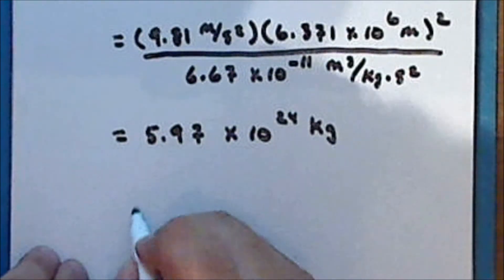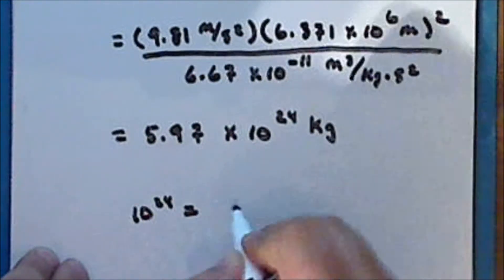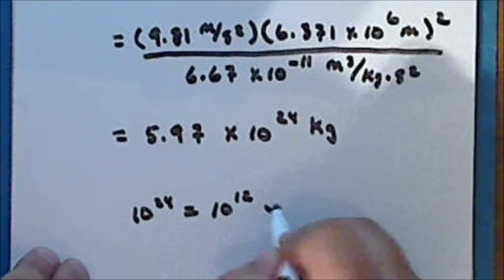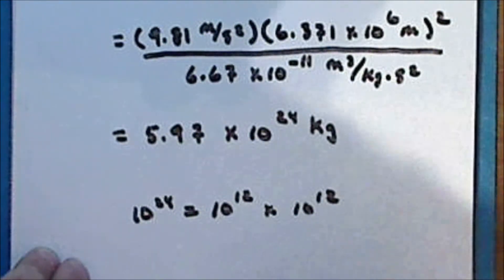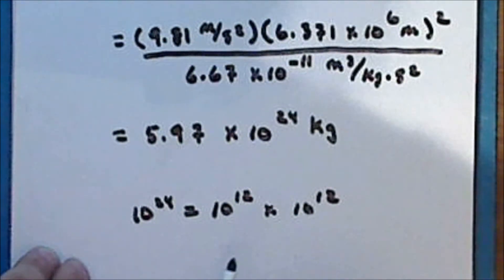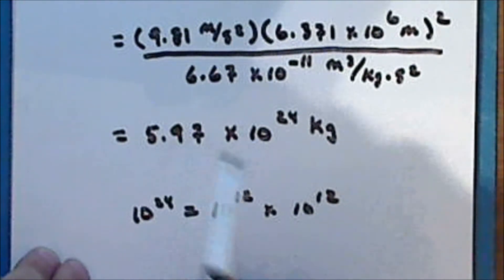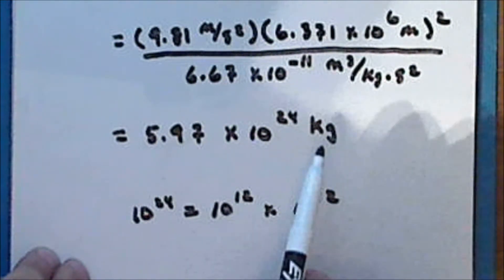Now 10 to the 24th is the same as 10 to the 12th times 10 to the 12th, so the mass of the Earth is 5.97 trillion trillion kilograms.